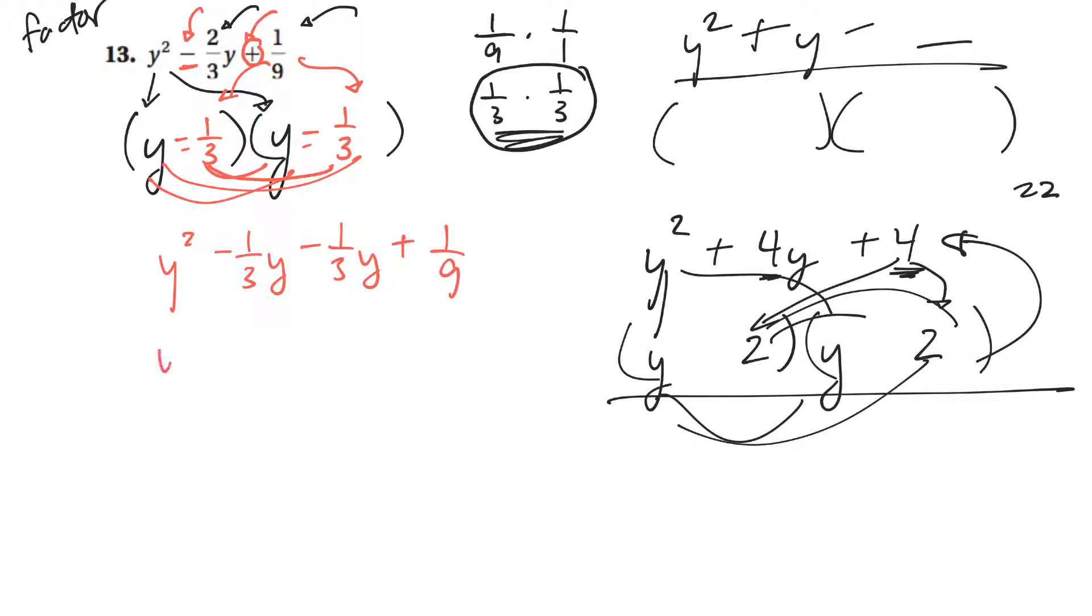And then collecting these two, they have a common denominator, so I can combine their top. So that would be negative 1/3 minus another 1/3 is negative 2/3 y plus 1/9, which is what I had originally.